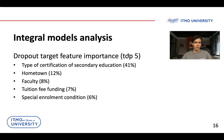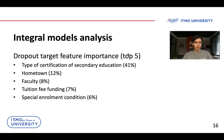We also analyzed feature importance for our integral prediction models. The most important feature for almost every target is the type of certification of secondary education — representing what education the student had before entering university, for example college or high school. After that, hometown is also important. Our hypothesis is that if the student's hometown is the same city as the university, the student may have lower motivation to study, whereas a student who came from another town may have higher motivation.